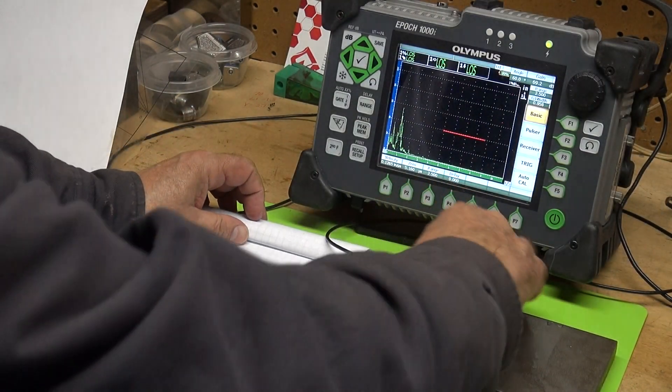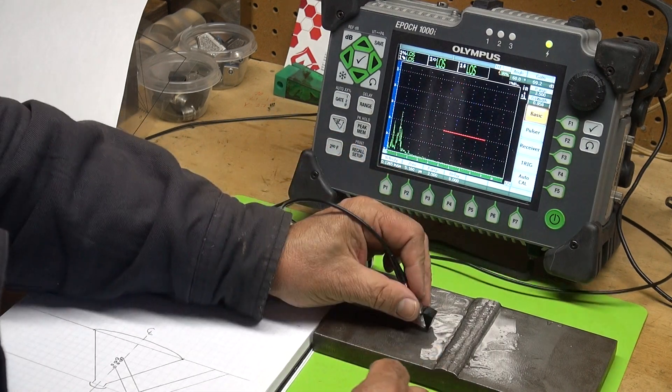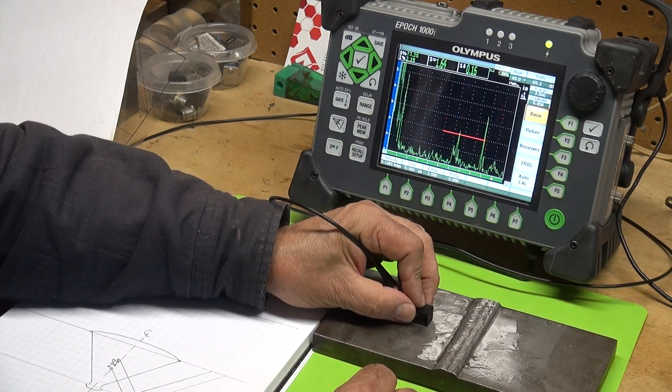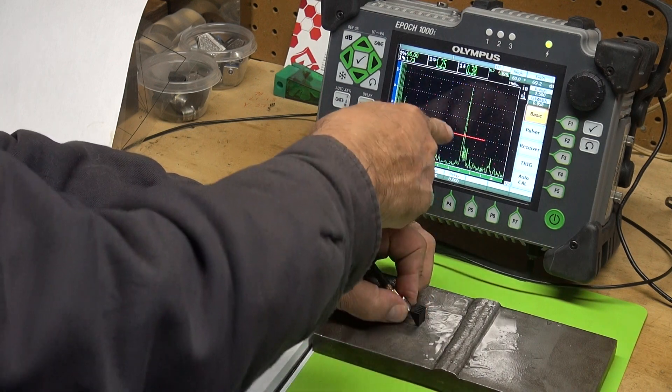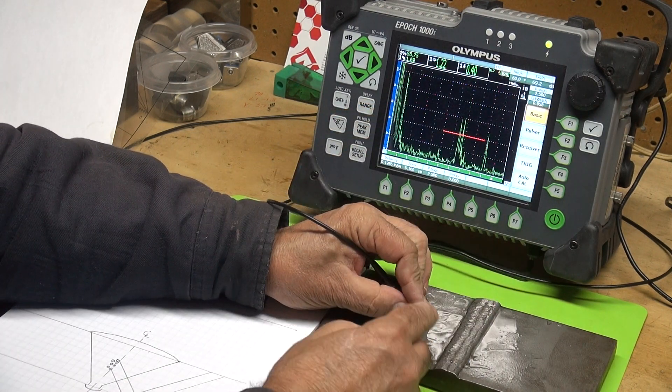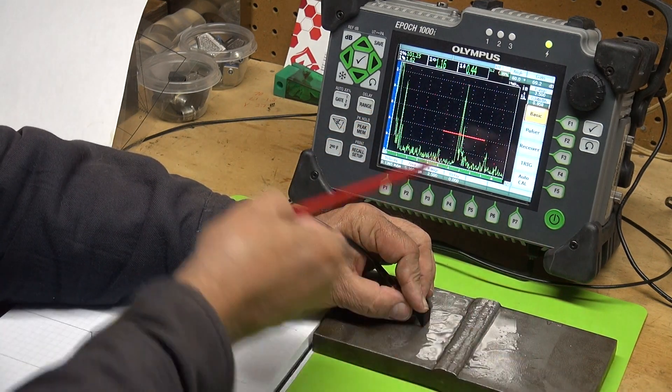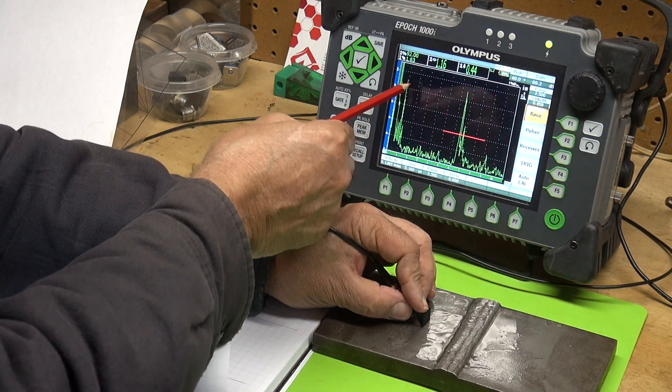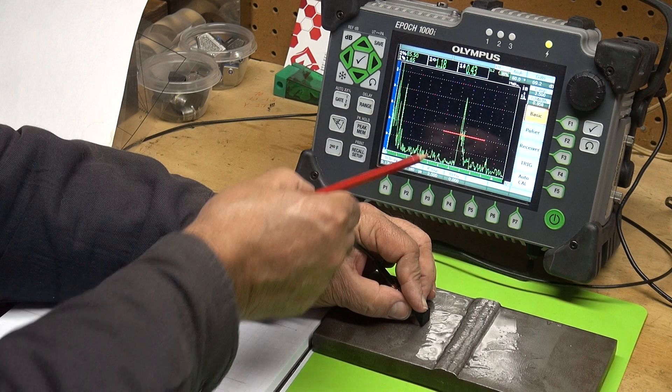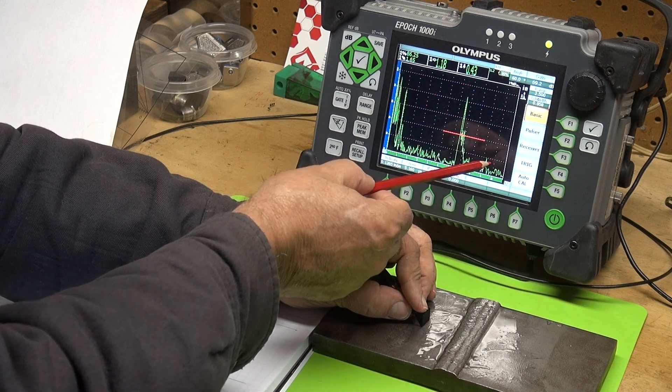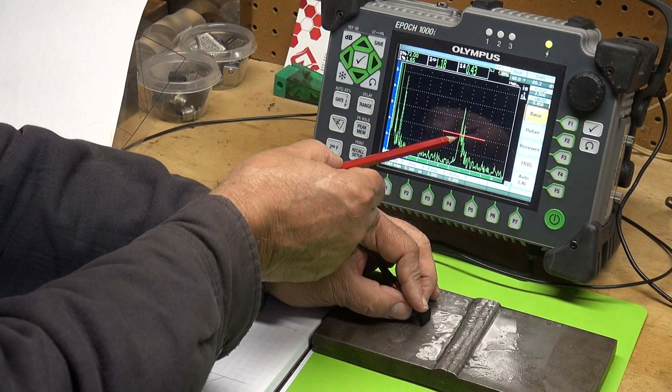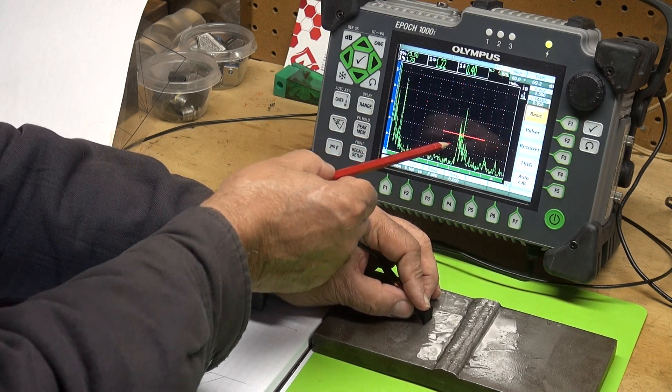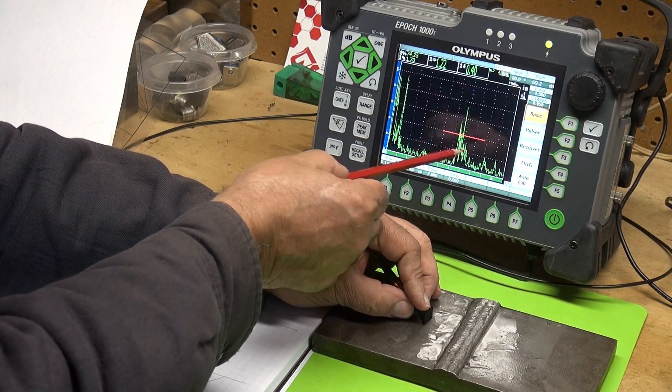Right here, this is cluster porosity right in this area. You can see I'm in my second leg, here's the ID or the bottom of the weld, this is the OD or the top. Right in the middle of the weld I have porosity. We can see it's a multi-faceted signal, quite broad envelope.